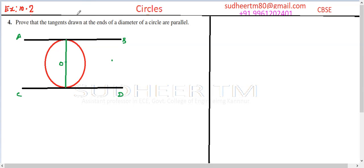Question 4, exercise 10.2, circles chapter. Prove that the tangents drawn at the ends of a diameter of a circle are parallel.